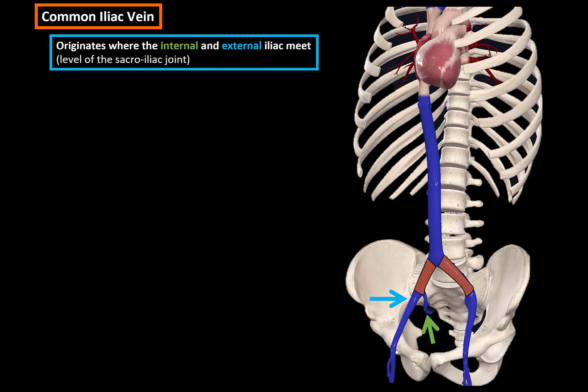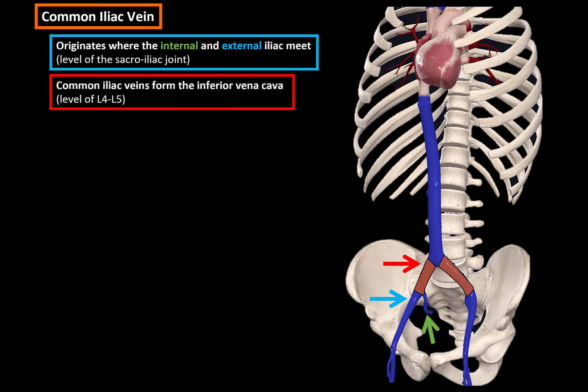The common iliac veins originate at the confluence of the internal and the external iliac veins. Confluence means where veins meet, so it is formed when these two veins meet. When the two common iliac veins meet at the level of vertebrae L4 and L5, they form the inferior vena cava. The common iliac veins have no valves.